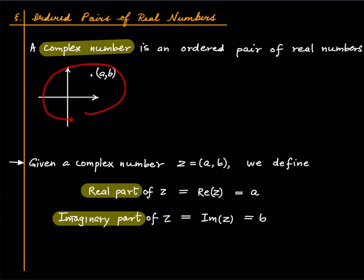One can think of a complex number as an element of the Cartesian plane. Basically you have the x-axis and the y-axis, and a point a comma b can be thought of as a dot whose x-coordinate is a and the y-coordinate is b. It is not clear as to why we call such a thing a number — if something is a number you should be able to do some arithmetic with it, so we will get there, but for now it's just an out-of-nowhere definition.